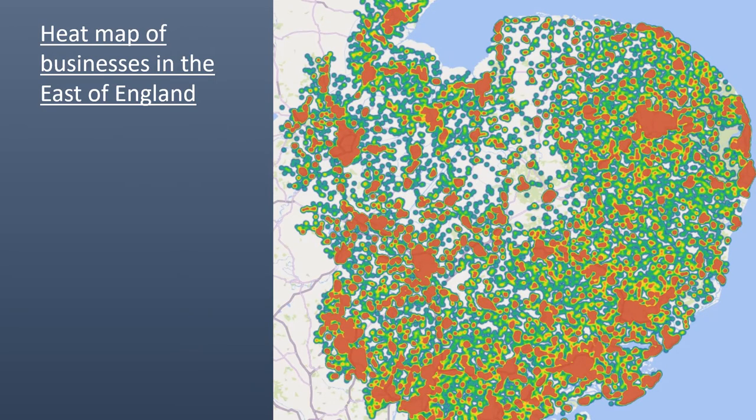For example, we demonstrate how you can create heat maps of all of the businesses in the East of England region, to understand where they're concentrated. You can see the clusters around Cambridge and Peterborough and other areas, but you can also see the areas where there's far less business.